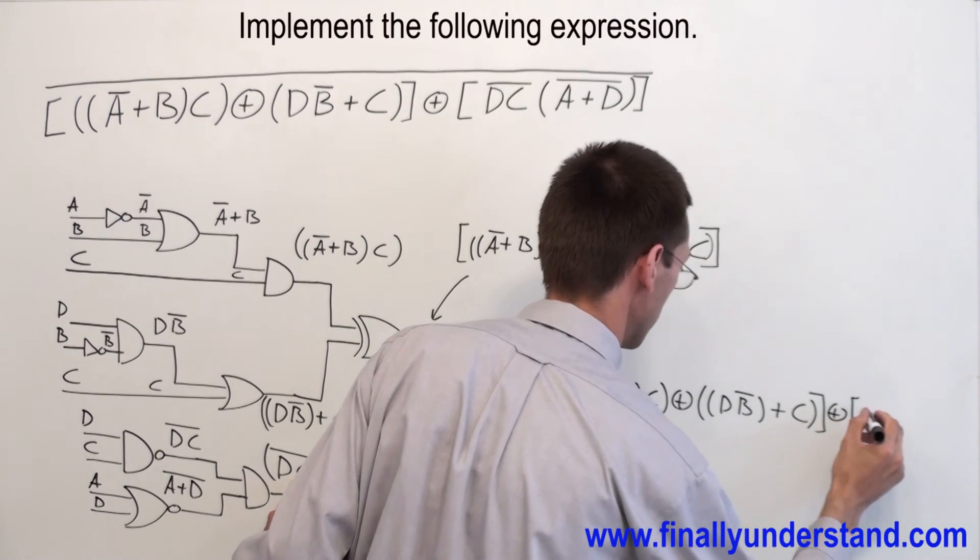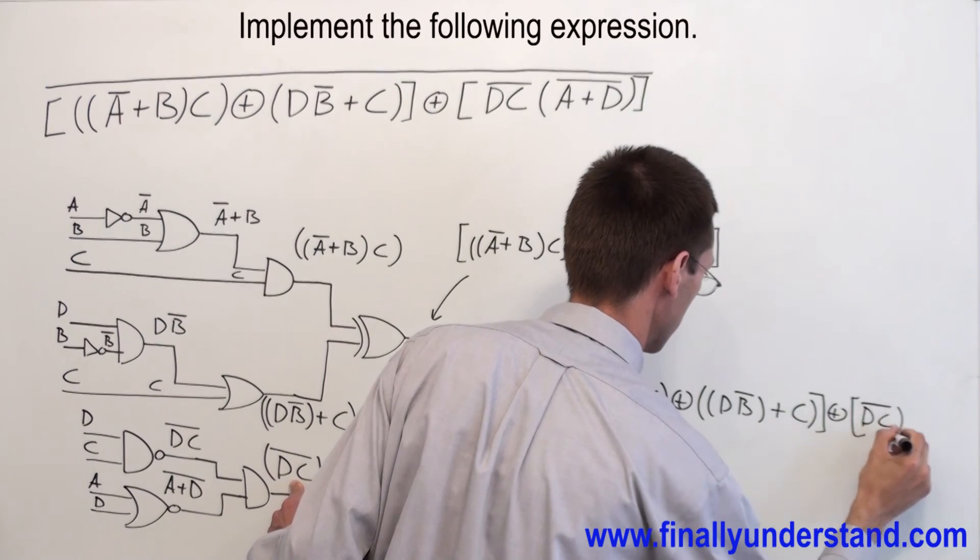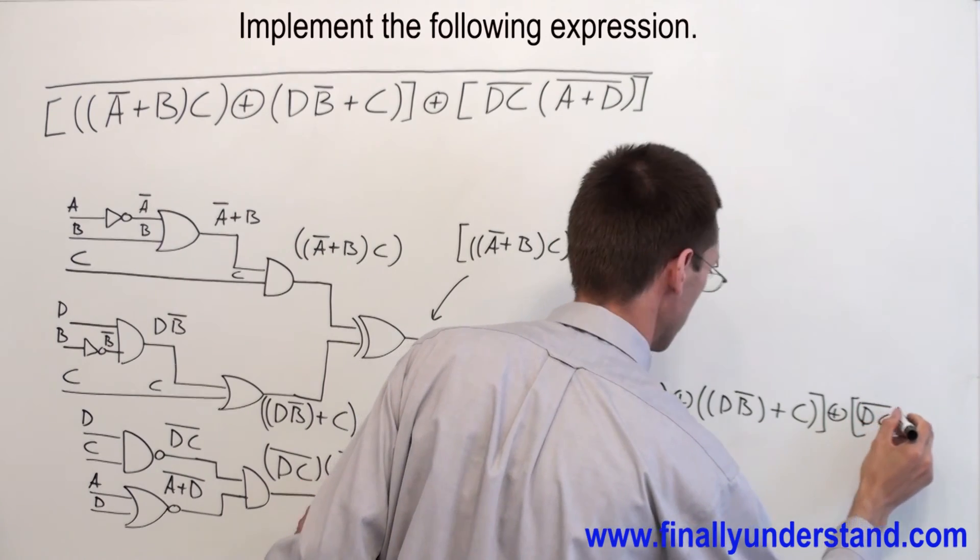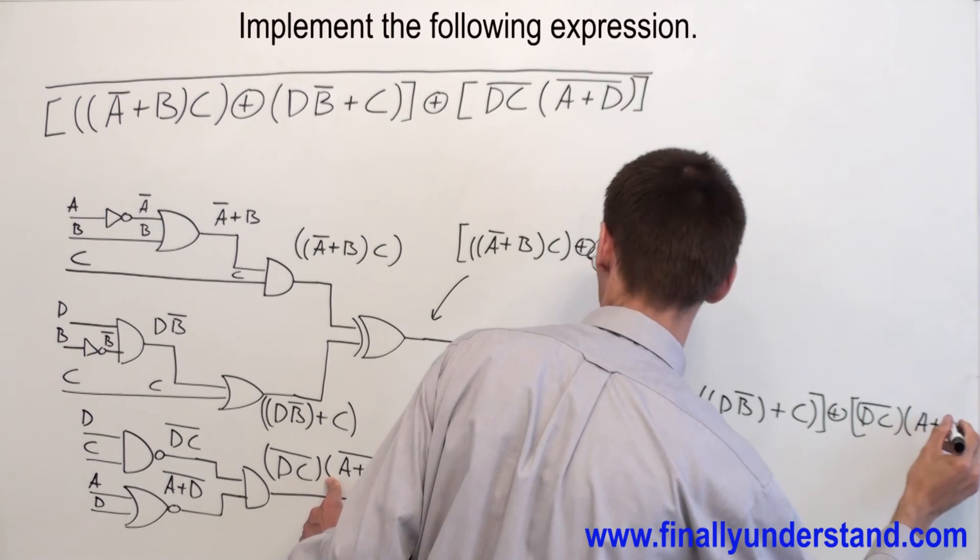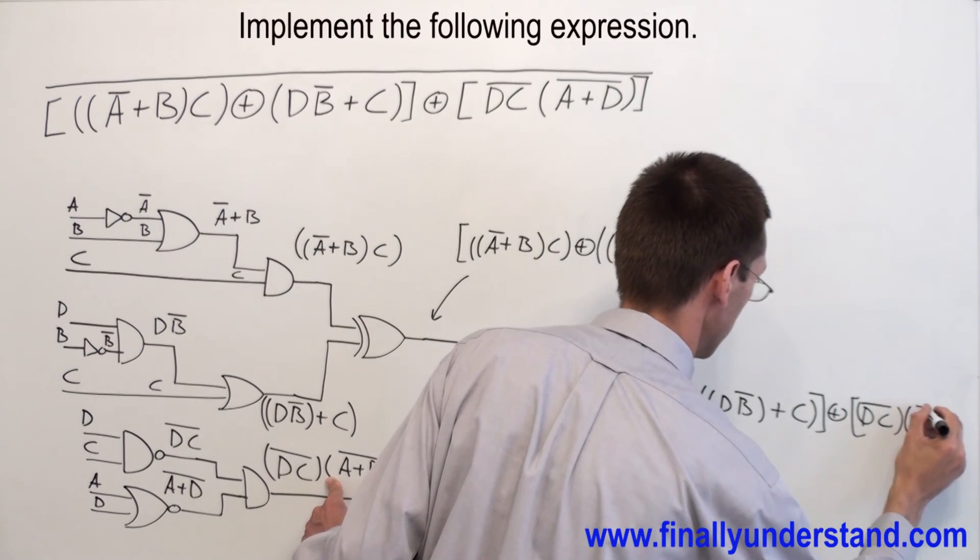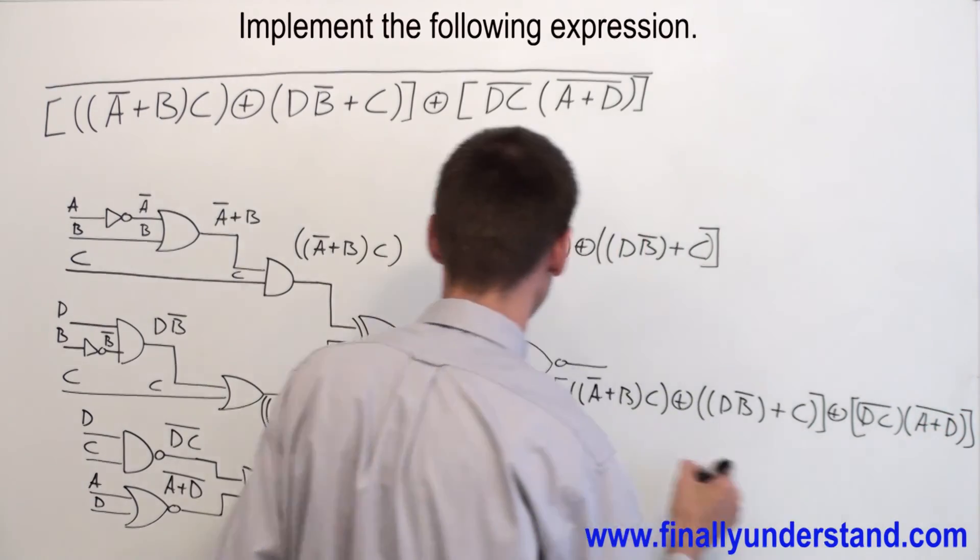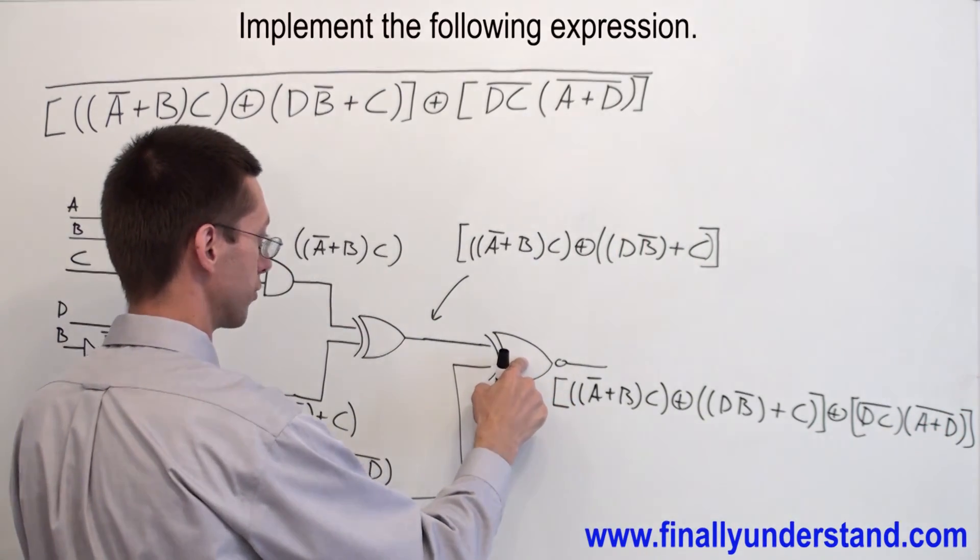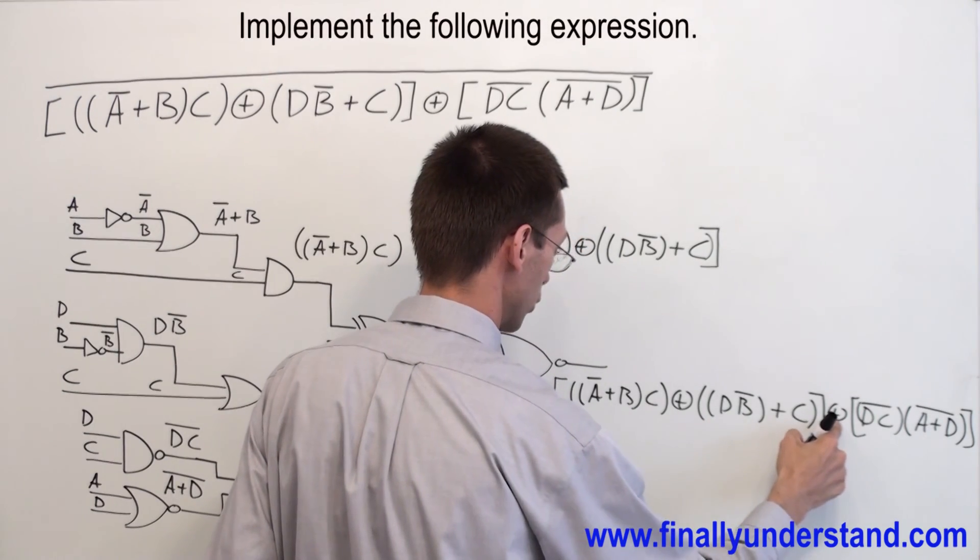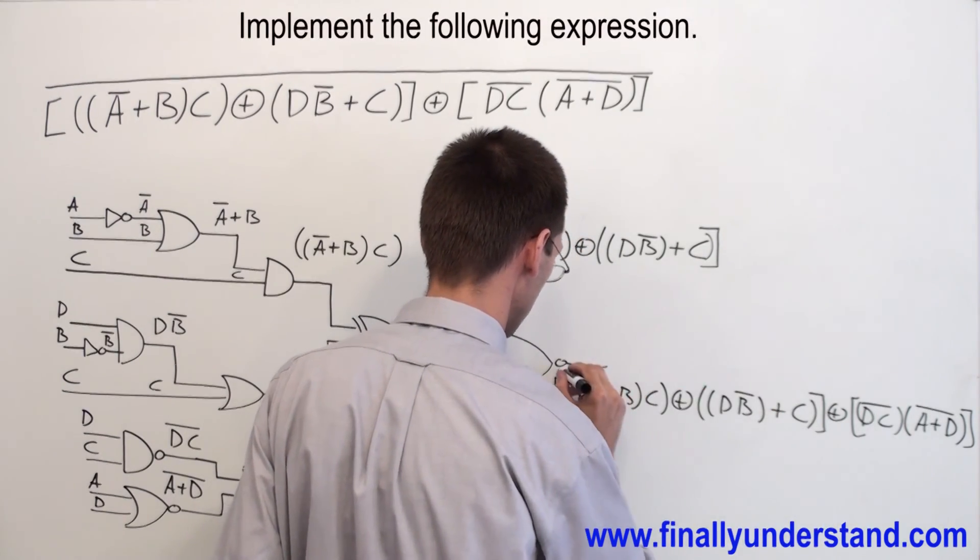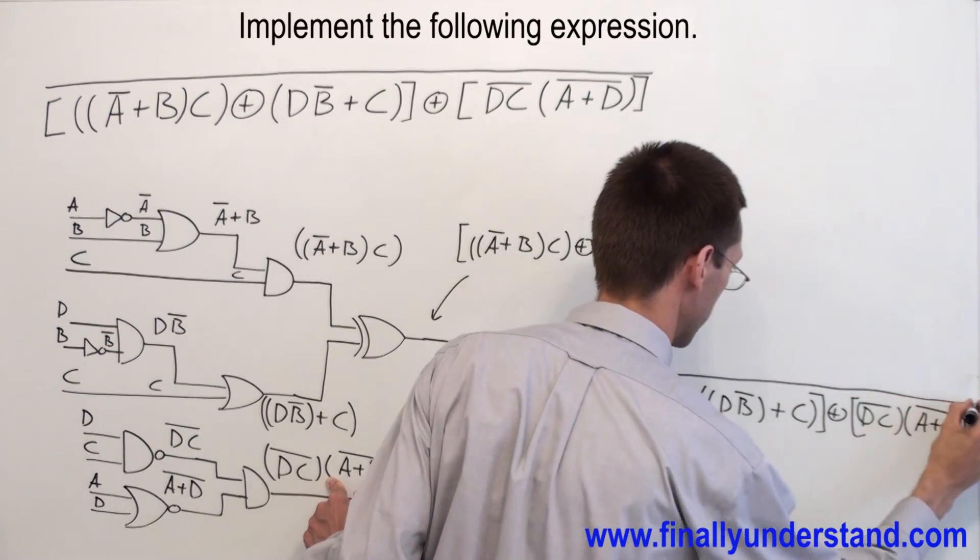And on the second input, we get exclusive NOR over here. I have D, C NAND, ANDed with A or D NOR. And we said this is exclusive NOR. So this is my exclusive OR sign, but has to be NOR. That's why I'm going to have the bar over the whole expression.